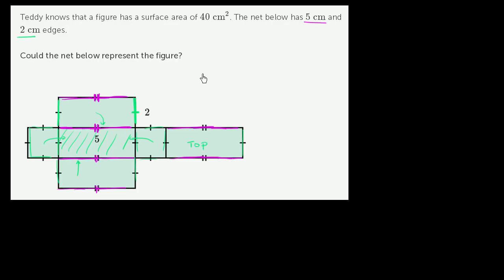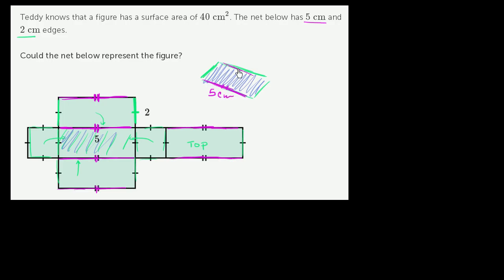This polyhedron is going to look something like this. The base has a length of 5 centimeters — that's our base right over here. This dimension is 5 centimeters, the same as that dimension up there. When we fold up that side, that could be this side right over here along this 2 centimeter edge. When you fold this side in, that's that side right over there.